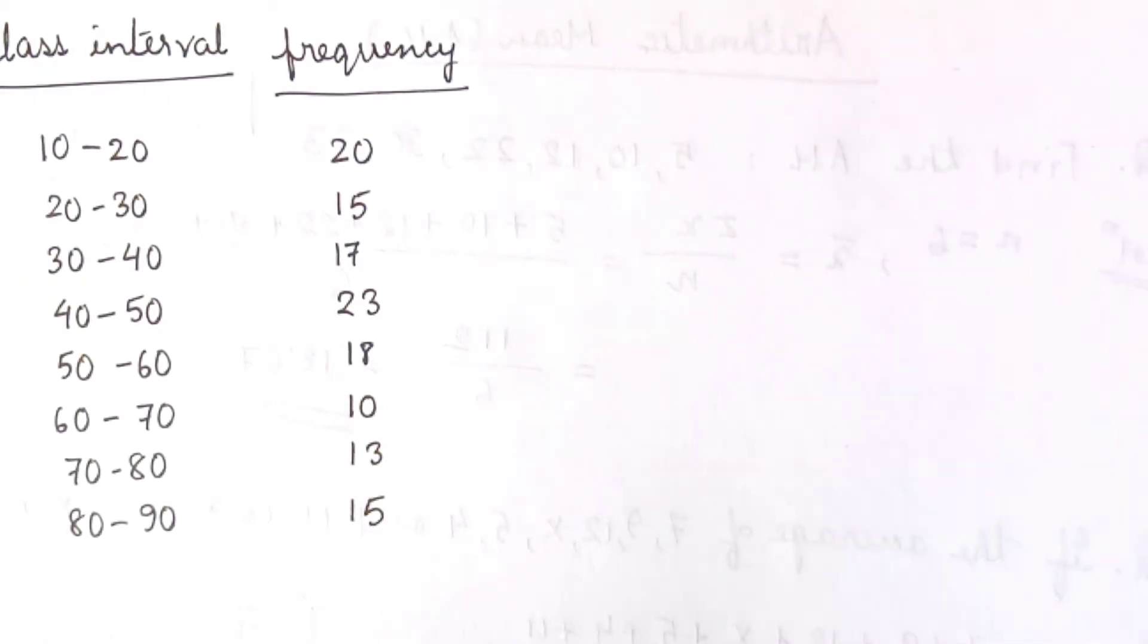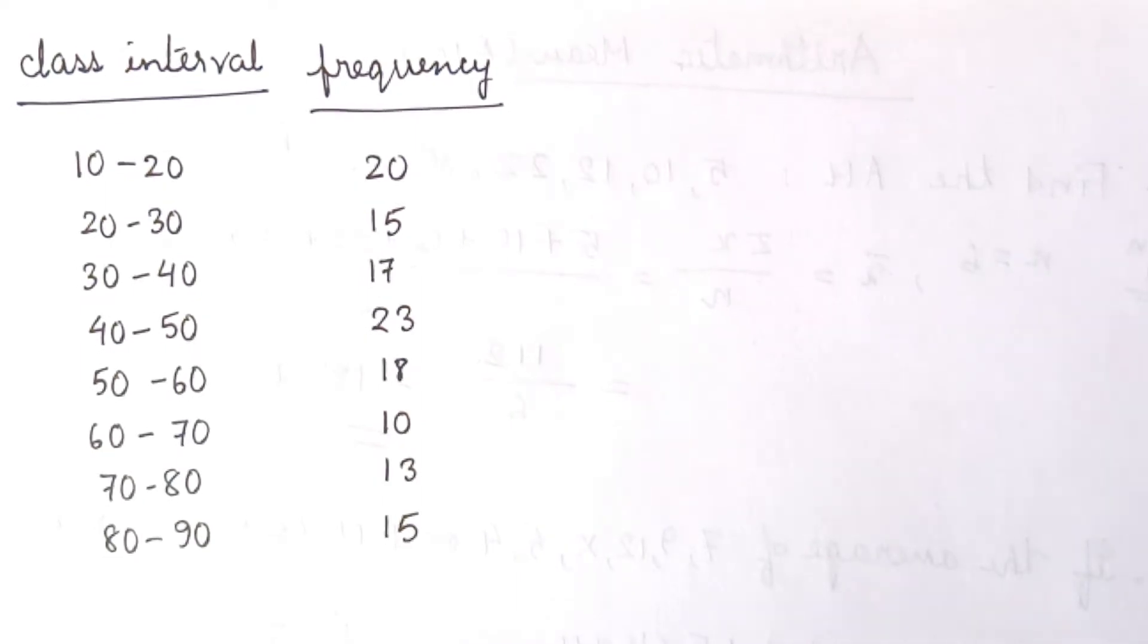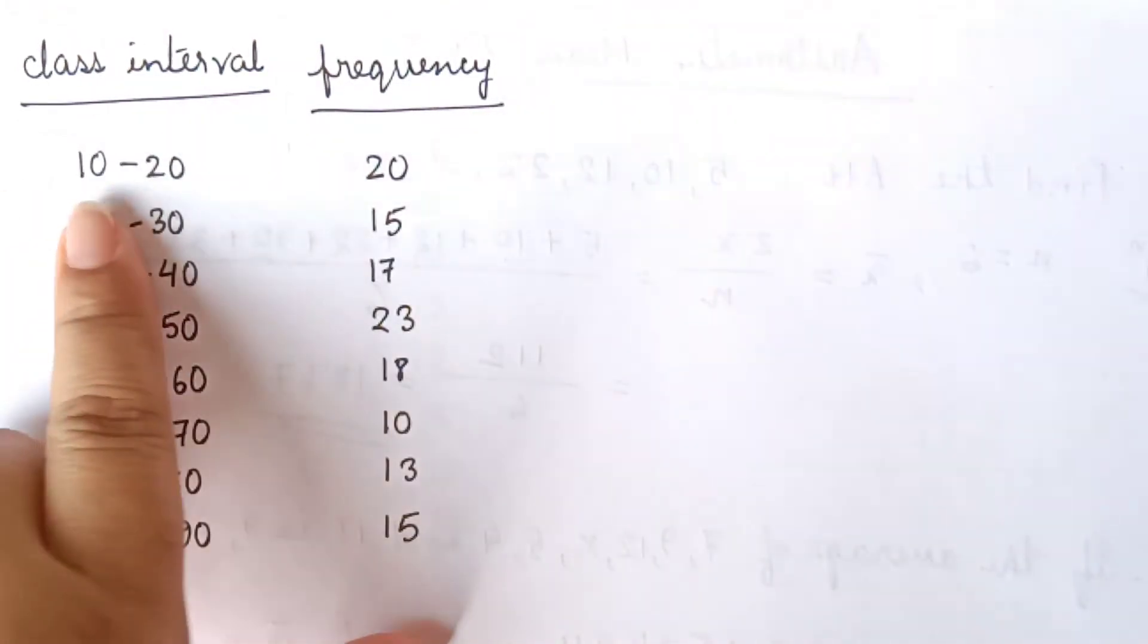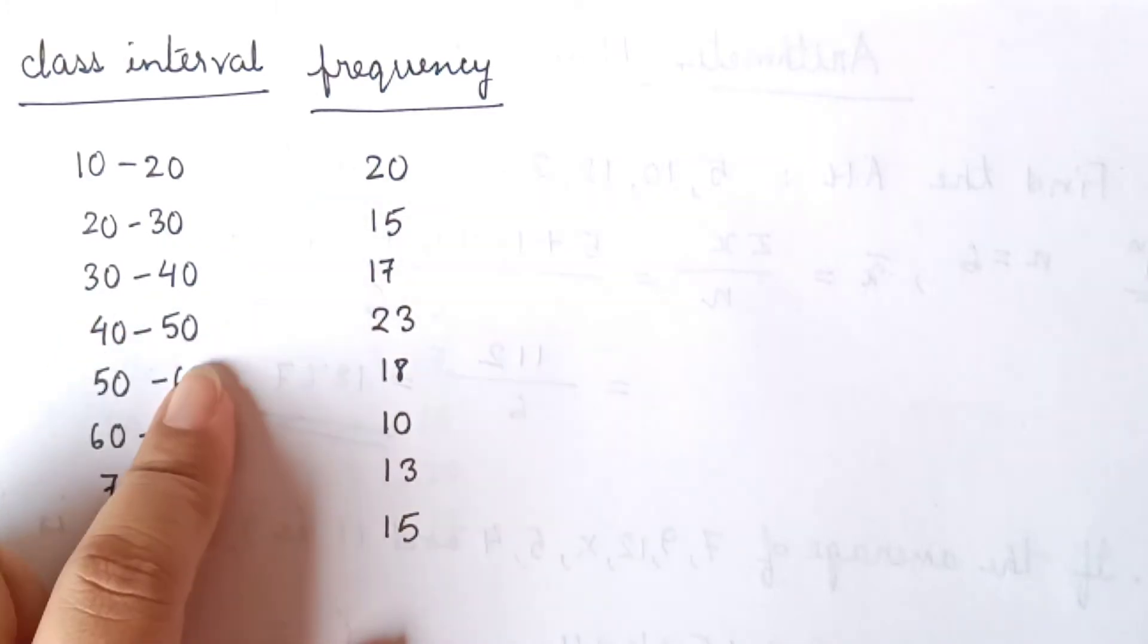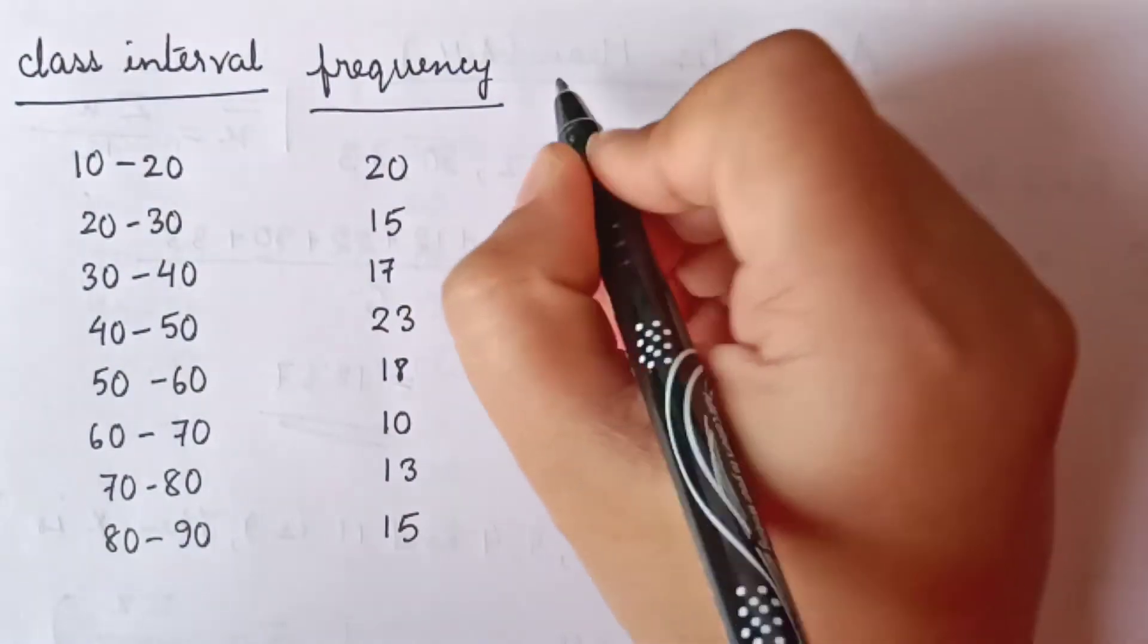Hello everyone, let us discuss how to find the arithmetic mean when the question is given as a grouped frequency distribution. When class interval is given along with the frequency value, it is called group frequency. Now, how to solve this question? First of all, we will find out the mid values.